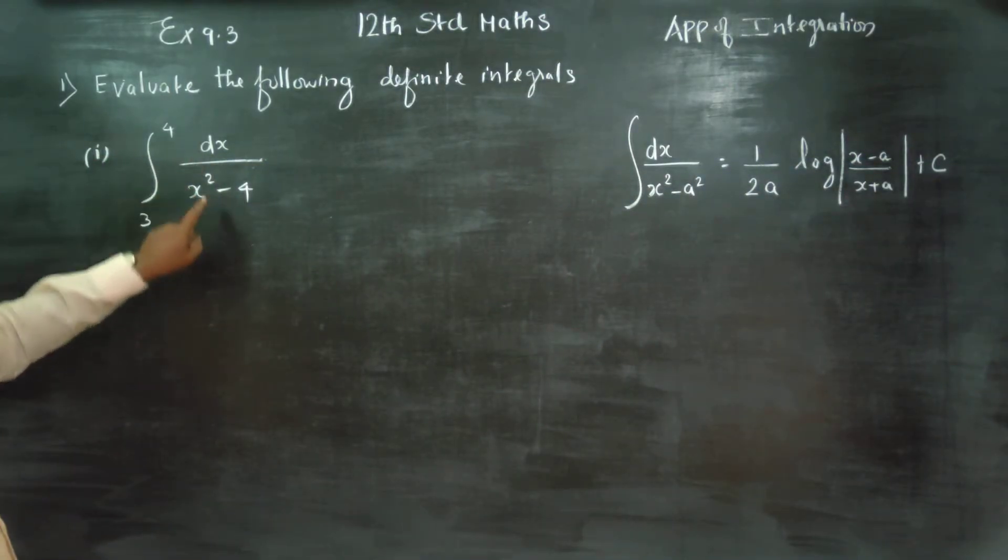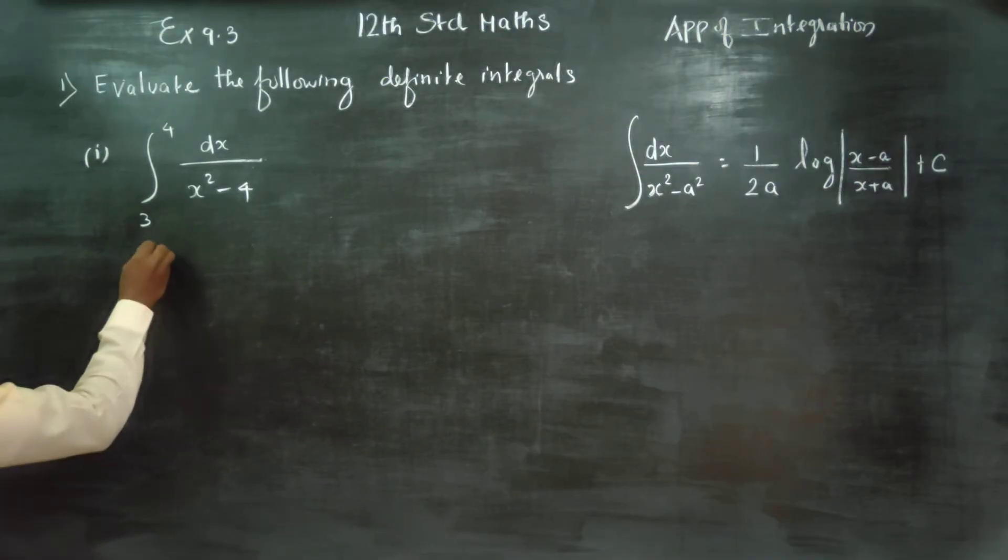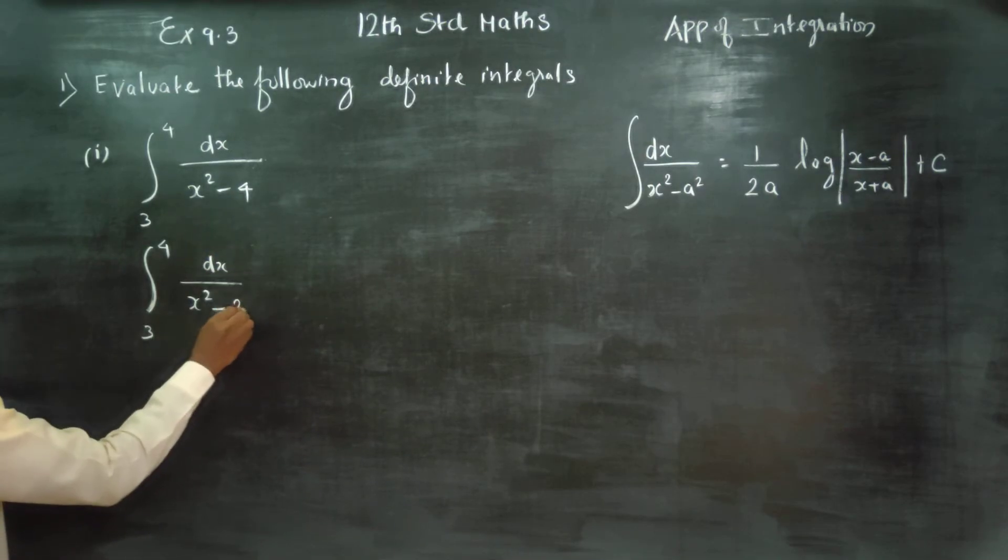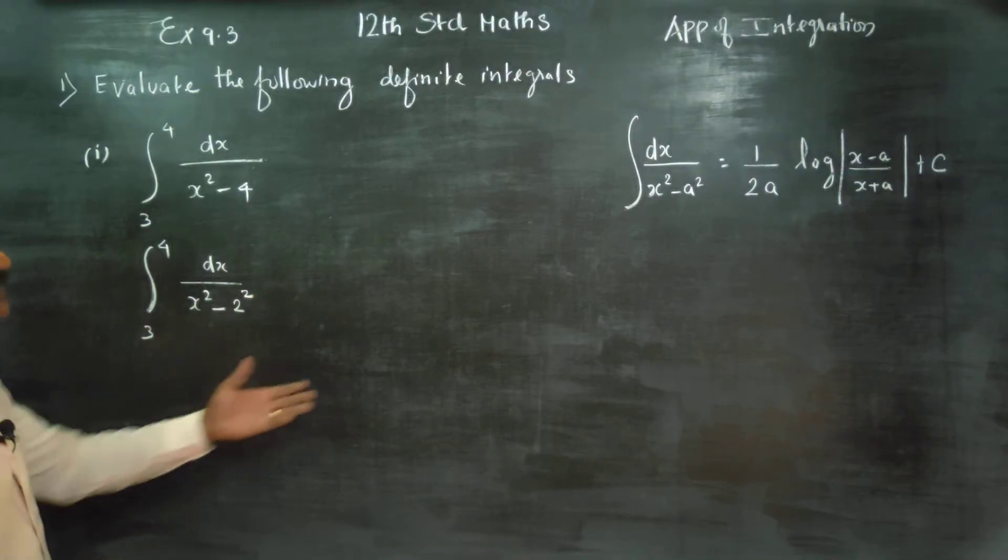Integration 3 to 4, dx by x square minus 4. About this sum, 3 to 4 dx by x square minus 4 can be written as x square minus 2 square. It actually matches with this sum.